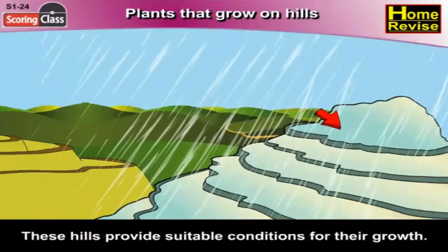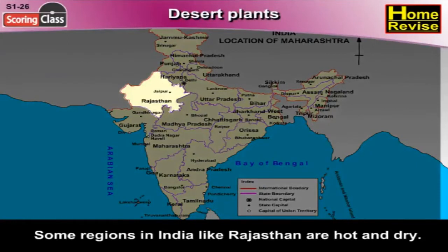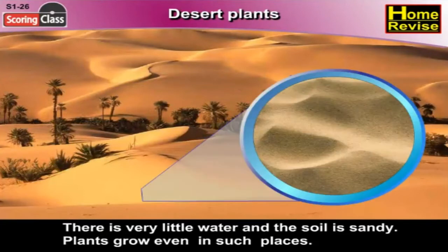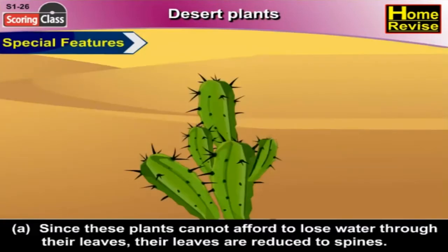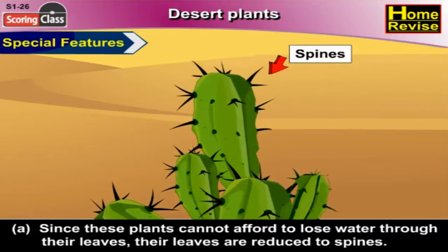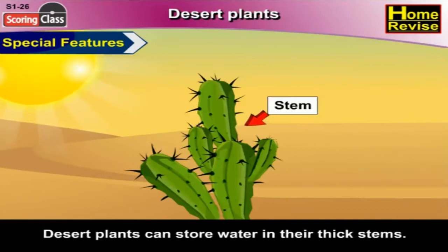These hills provide suitable conditions for their growth. Desert plants: Some regions in India, like Rajasthan, are hot and dry. There is very little water and the soil is sandy. But plants grow even in such places because of special features: (a) Since these plants cannot afford to lose water, their leaves are reduced to spines. (b) The thick and fleshy stems do the work of leaves — manufacturing food. Desert plants can store water in their thick stems.